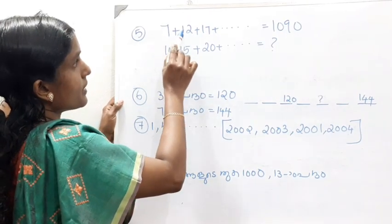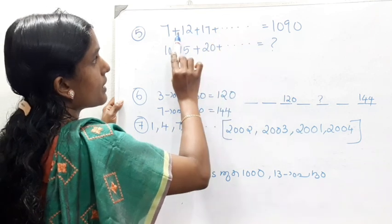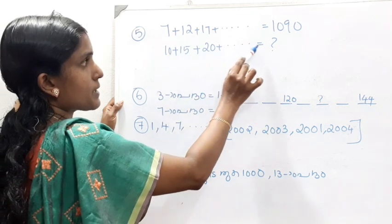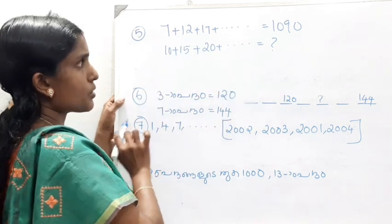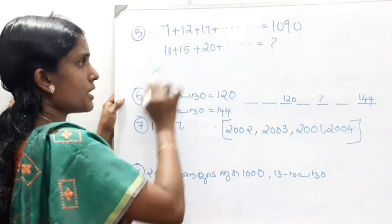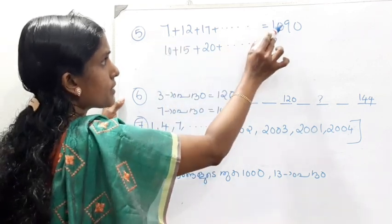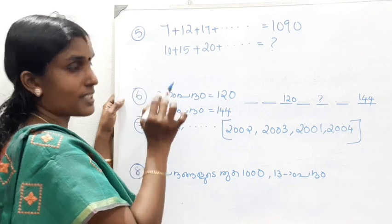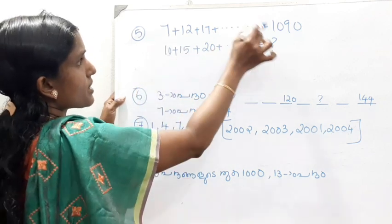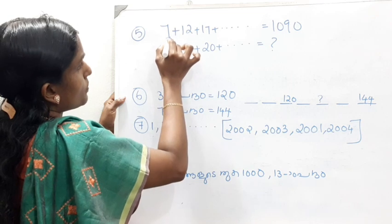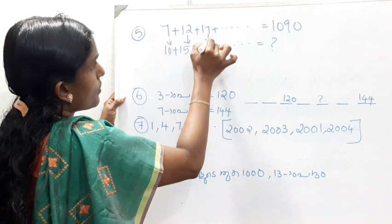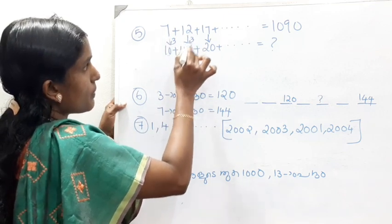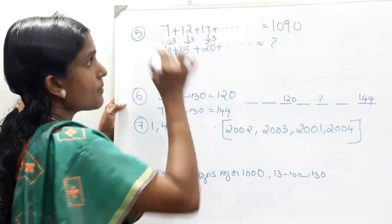Question 5: 7 plus 12 plus 14 plus etc. This is the series we have seen. 1 plus 12 plus 14 plus 15 plus 18 etc. 7 plus 10 — we have a connection here. 7 times 3 times 10, 12 times 3 times 10, 15 times 17 times 3 times 20.